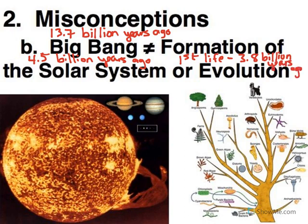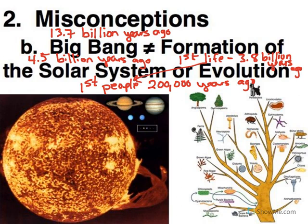The first people, as we think of people, was about 200,000 years ago. Obviously a lot of different life forms in between the first life and people, which is what evolution deals with. So obviously these things did not all happen at the same time.